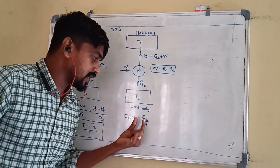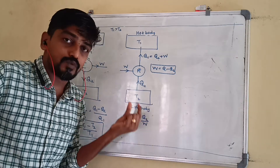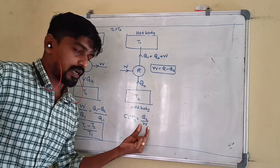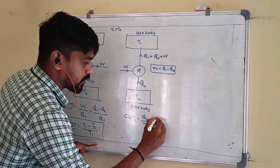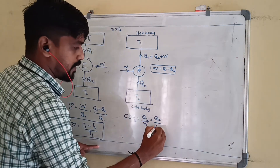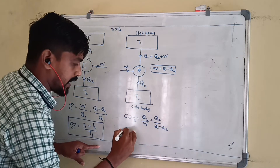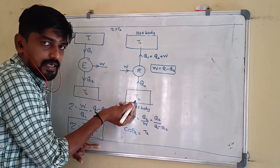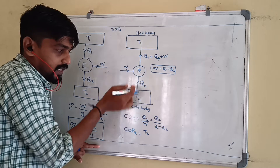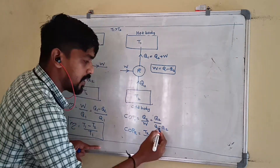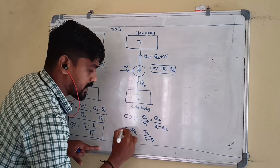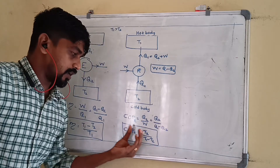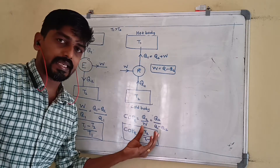COP of refrigerator is the ratio of quantity of heat absorbed, the refrigerating effect Q2, to the work input W. COP of refrigerator equals Q2 divided by W, which equals Q2 divided by Q1 minus Q2, which equals T2 divided by T1 minus T2.